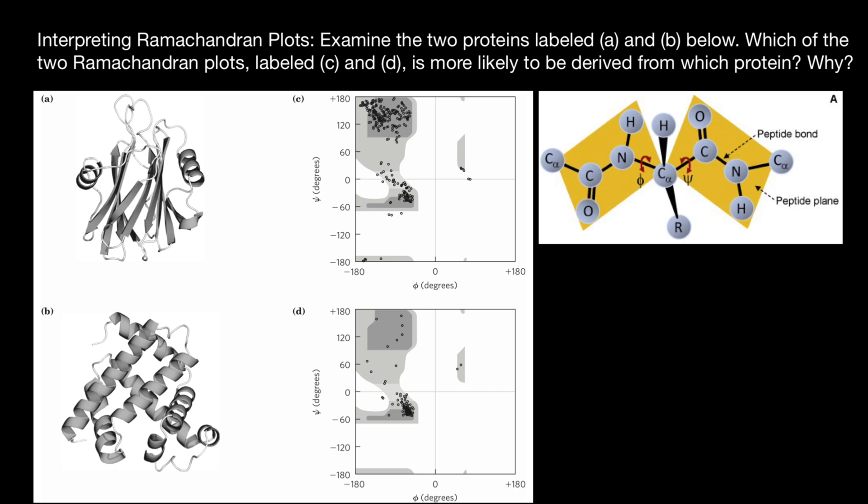And here we have a peptide bond, which is a partial double bond. Double bond here and partial double bond here. We have a peptide bond. And here we also have a peptide bond between carbon and nitrogen.